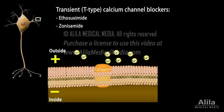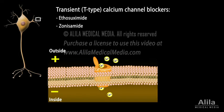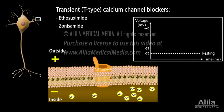Some other drugs block the so-called transient or T-type calcium channels. T-type calcium channels open in response to small depolarizations of the plasma membrane, bringing membrane voltage closer to the threshold. They are concentrated in the dendrites of neurons and play important roles in synaptic integration.